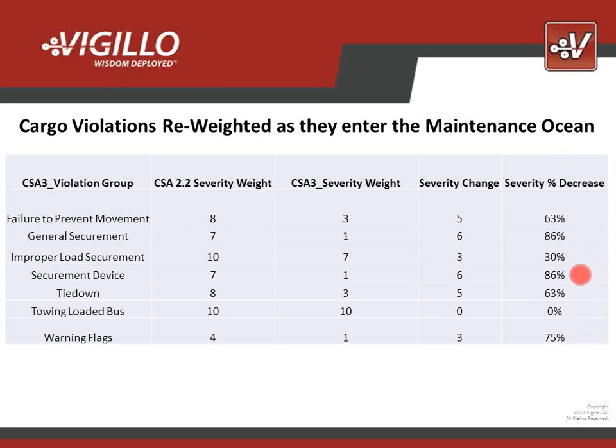The one exception: towing or pushing a loaded bus — you've got passengers on a bus and you are towing and pushing it. That was a 10 and it remains a 10 — that one appropriately stayed very highly weighted. Shortly after World War II, the United States Navy was decommissioning warships no longer needed. The Navy gave them the designation AT-6, and that is what became known as — when you want to get rid of something, you '86' it. Well, you can see here: we have '86'd' cargo into the ocean of maintenance. They're gone.